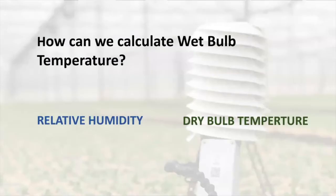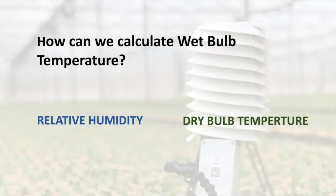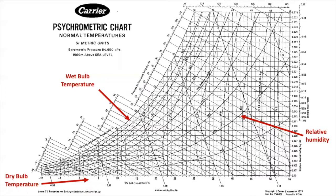But where can we get wet bulb? To calculate wet bulb, we need to get data about air temperature and relative humidity. So we need relative humidity, we need dry bulb, and we need something else — we need a psychrometric chart. So let's learn how to use this.